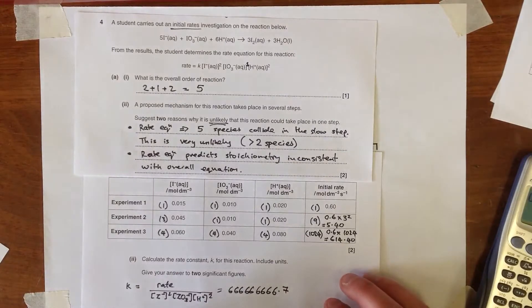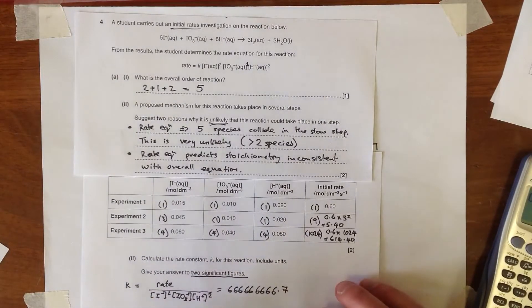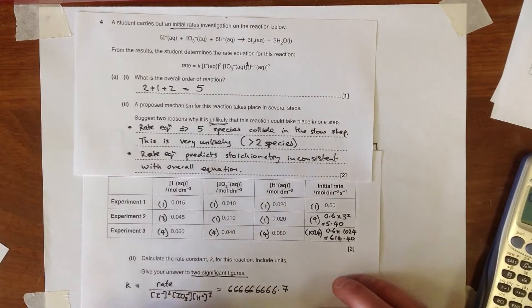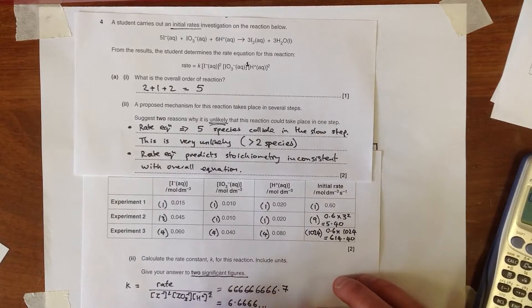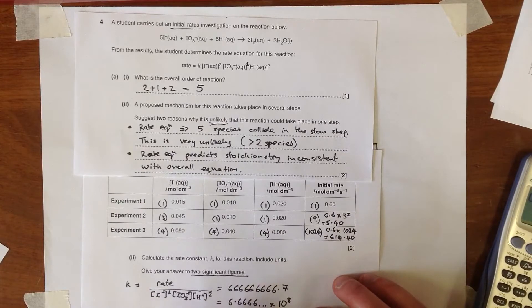Now, the difficulty is this is a pretty inelegant way of presenting the number, and we're asked to give it to two significant figures. So by far the best way of doing this is actually to represent it in standard form, and you can switch to standard form in your calculator, at which point this becomes quite a nice 6.6666 etc. times 10 to the power 8. And that can then be written to two significant figures as just 6.7 times 10 to the power 8.